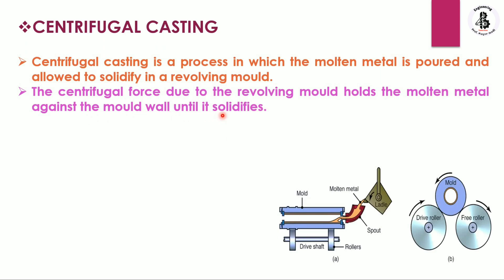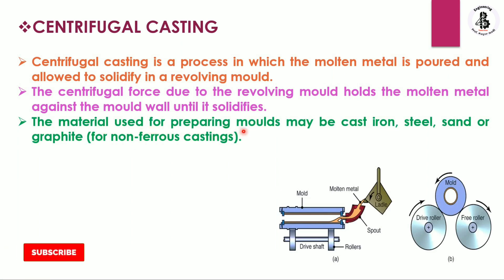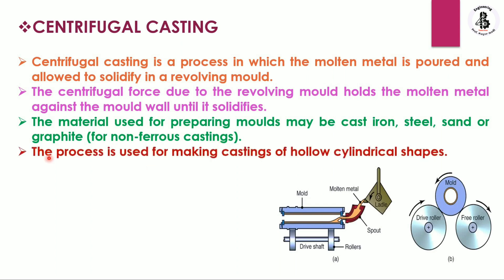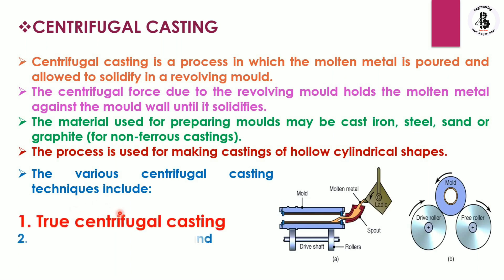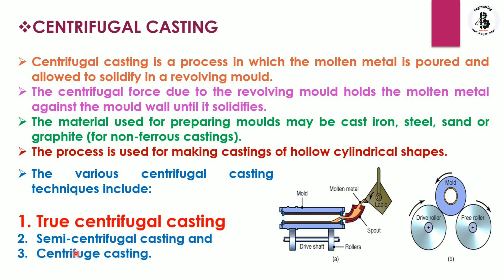The solidification process occurs inside the hollow mold. The materials used for preparing molds may be cast iron, steel, sand, or graphite — typically for non-ferrous castings. The process is used for making castings of hollow cylindrical shape, which is a unique application of centrifugal casting. The various centrifugal casting techniques include: first, true centrifugal casting; second, semi-centrifugal casting; and third, centrifuge casting. In this video, I explain in detail the true centrifugal casting process.